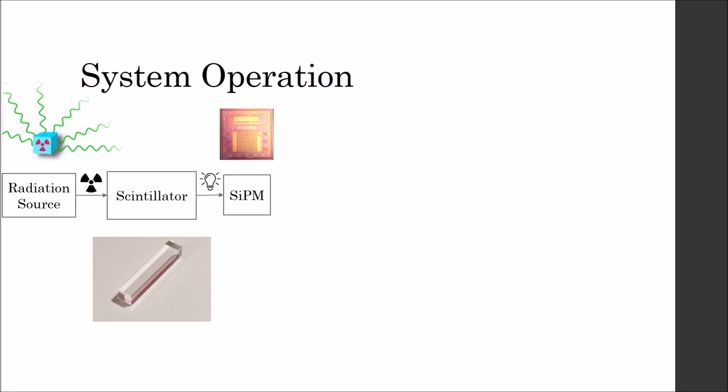The light emitted from the scintillator will then be captured by the silicon photo multiplier. The silicon photo multiplier is the first step into the control circuit. It's a small chip with a small window at the top. It receives the photons emitted by the scintillator, and through breakdown events, creates current pulses, which are sent to the control circuit.